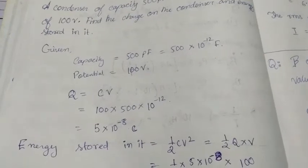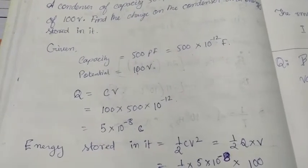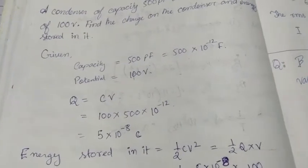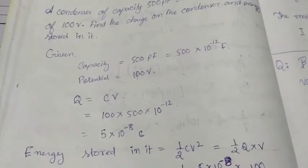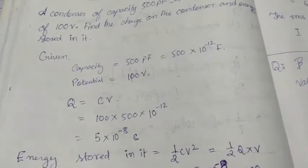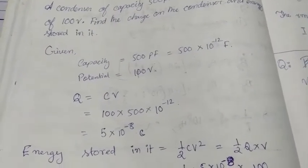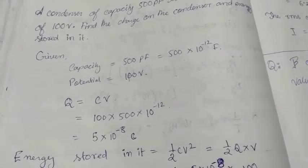Now the energy stored in it. Energy stored in it will be given by half CV square. Half CV square, which is equal to half CV into V. Or we can write CV to be equal to Q.